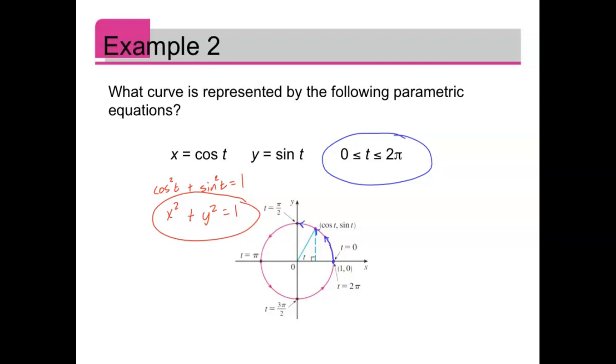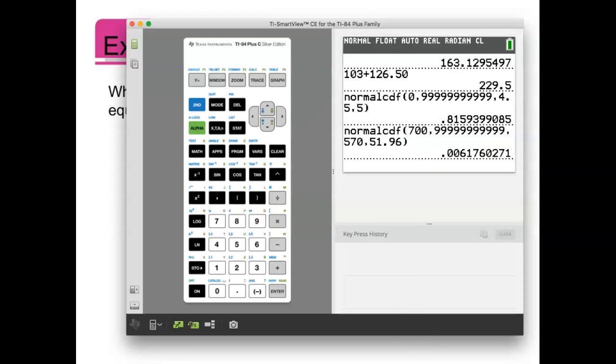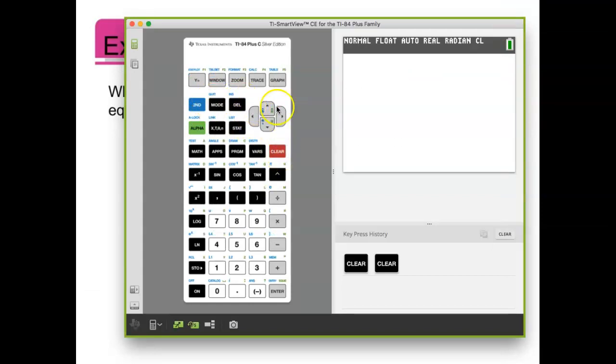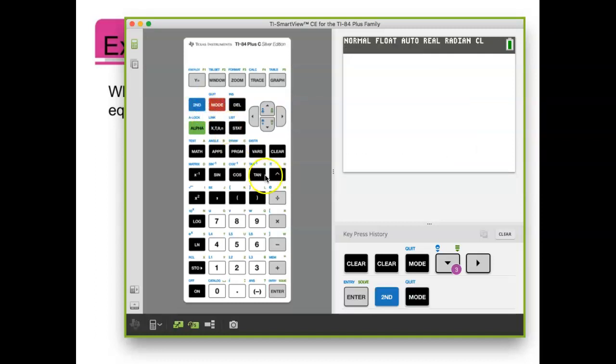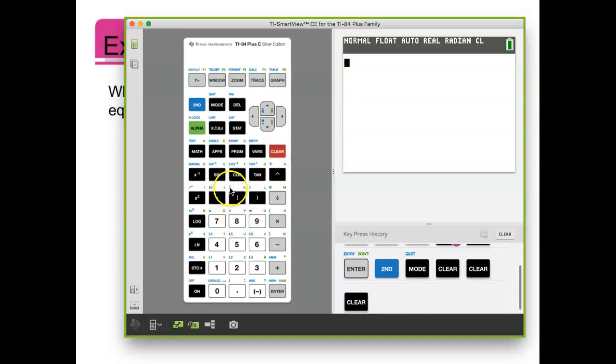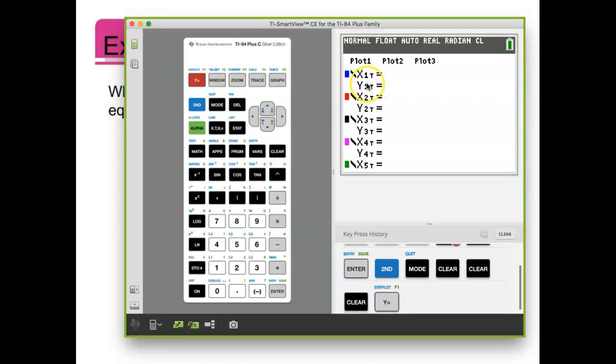Let's learn how to use our calculator. What you're going to do is change the mode of your calculator. Go to mode, go down to where it says function, and change it to parametric. Then quit to the main screen. That doesn't change anything about the main screen, but when you go into y equals, you're now going to see parametric equations instead of just y equals.